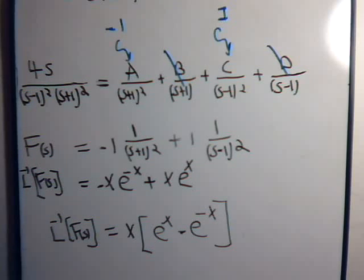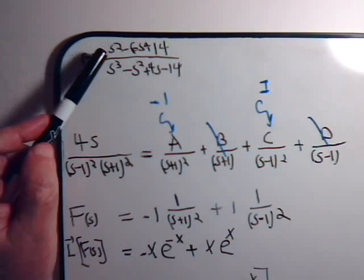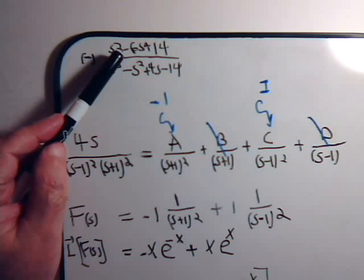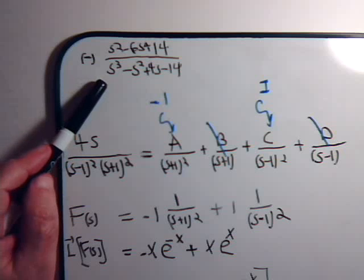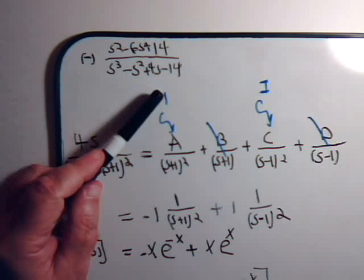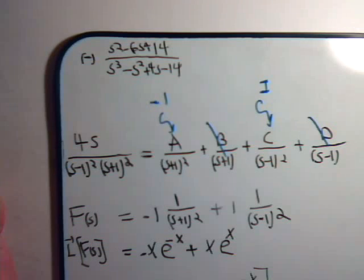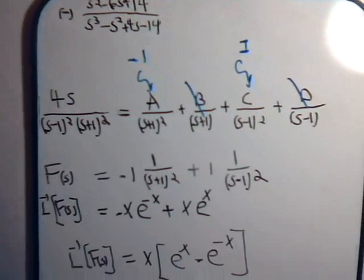We have one problem left: s squared minus 6s plus 14 divided by s cubed minus s squared plus 4s minus 14. Come back and join us in the next video. We'll get our final problem taken care of.